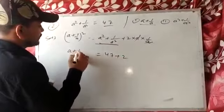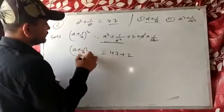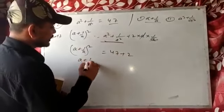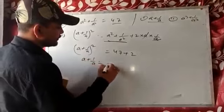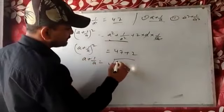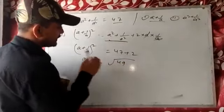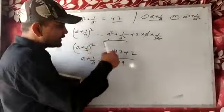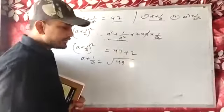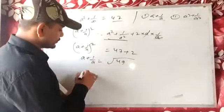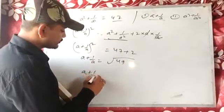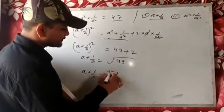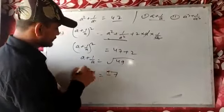In place of a squared plus 1 by a squared we put 47, so we get 47 plus 2 equals a plus 1 by a whole square — that is 49. Changing the side of the square gives root under 49, so the value of a plus 1 by a is equal to plus or minus 7.